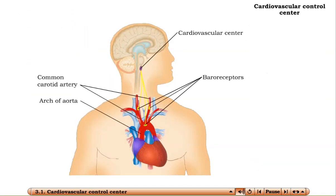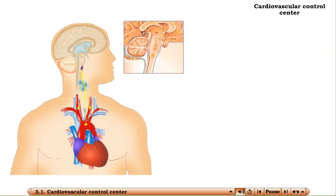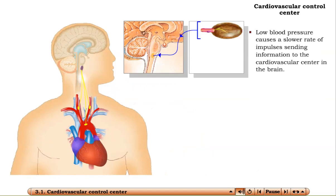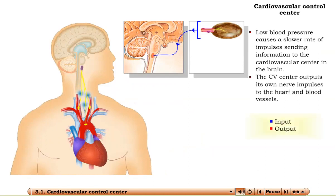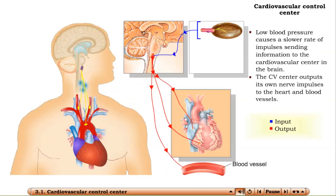Baroreceptors send information to the cardiovascular center in the medulla oblongata in the brain. When blood pressure drops, the slower rate of impulses from the baroreceptors conveys this disruption to homeostasis to the CV center, which then sends its own nerve impulses out to the heart and many of the blood vessels.